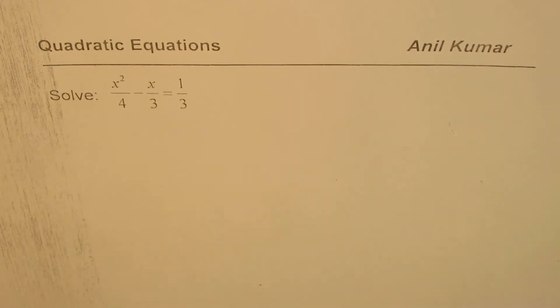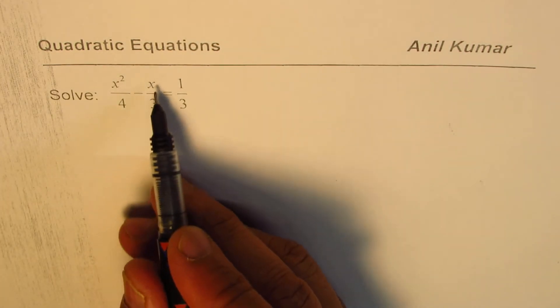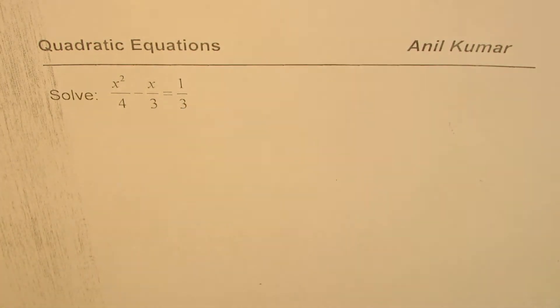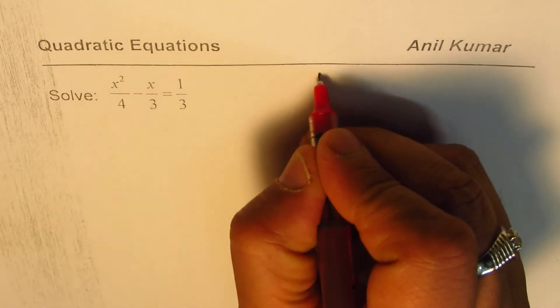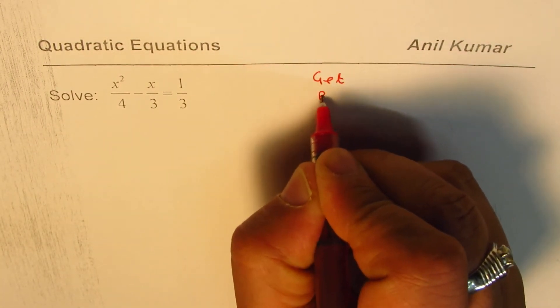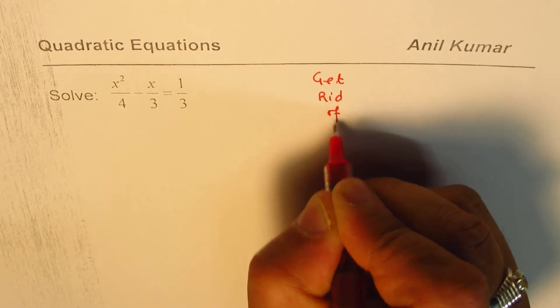Here is one of these. x squared over 4 minus x over 3 equals 1 over 3. Now what you see here is fractions. Strategy as you know is very simple and that is called get rid of fractions.